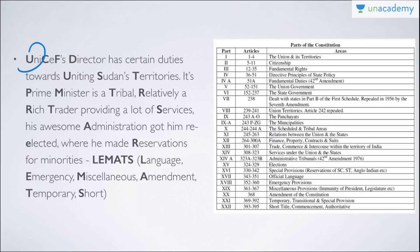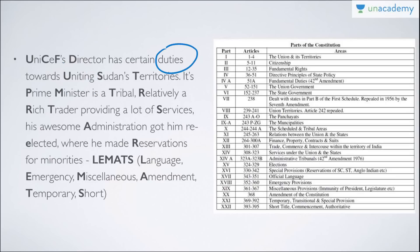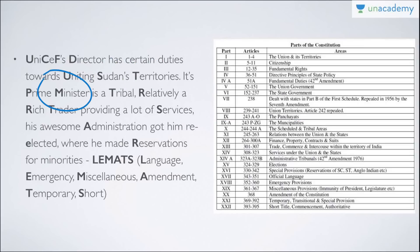Breaking it down: U is for Union and its Territories (Part 1). C is for Citizenship (Part 2). F is for Fundamental Rights (Part 3). D is for Directive Principles of State Policy (Part 4). Duty here is for Fundamental Duties (Part 4A) — not added to the acronym to avoid confusion. U (uniting) is for Union Government (Part 5). S is for State Government (Part 6). T is for Union Territories (Part 8 — Part 7 doesn't need to be remembered). P is for Panchayats (Part 9). M (municipalities) is for Municipalities (Part 9A).